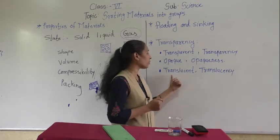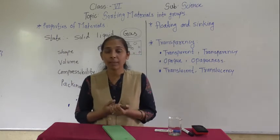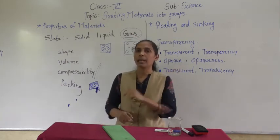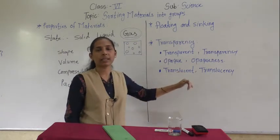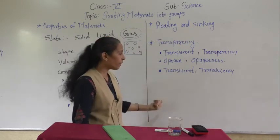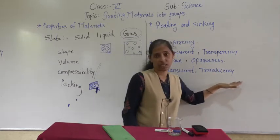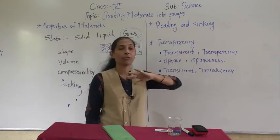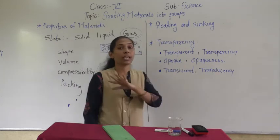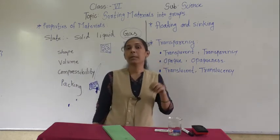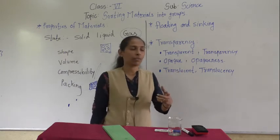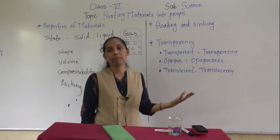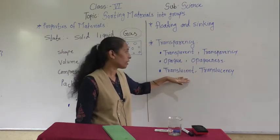Next is translucent. Translucent means there are certain materials through which we can see objects only partially. Those materials are called translucent materials and that property is called translucency. To summarize: transparent means we can see objects clearly; opaque means we cannot see objects at all; translucent means we can see objects partially — with a very blurry look. An example of a translucent material is butter paper, through which we can see only partially.